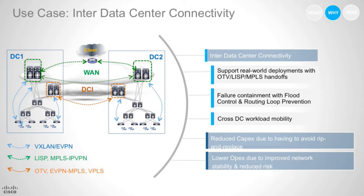It allows you seamless cross-DC workload mobility using the best-of-breed technologies. Again, why do we need this? It allows you to reduce your capex because you don't have to rip and replace to install a new technology — you can work with your existing data center interconnect technologies. It allows you to lower your opex because of improved network stability through better edge controls, which you would not have if you were doing a stretched VXLAN subnet, and hence reduce your risk.